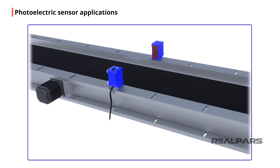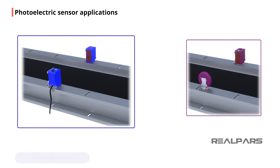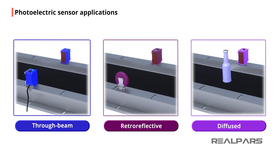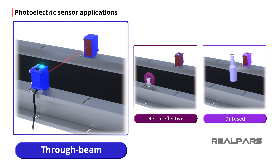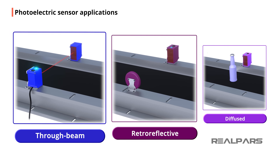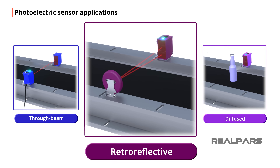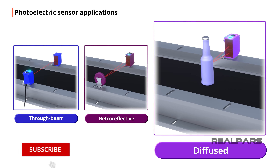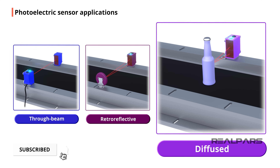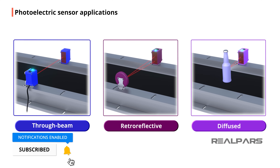The basic operation of a photoelectric sensor is: the sensor sends out a light beam from the part of the sensor called the emitter, and this light beam travels to the part of the sensor that collects the light, called the receiver. Depending on the type of sensor, the light can travel directly to the sensor's receiver, or it can travel to a reflector or the object, and then back to the receiver. I will go over this in more detail as I explain each sensor type.